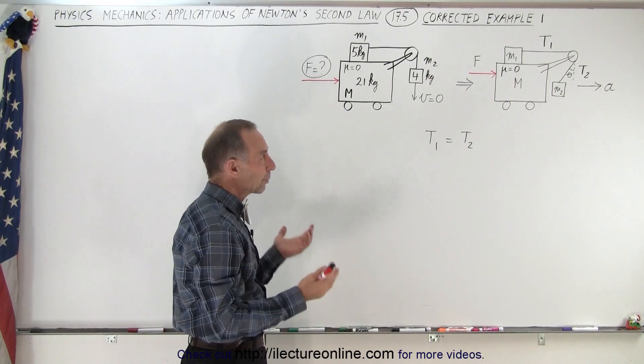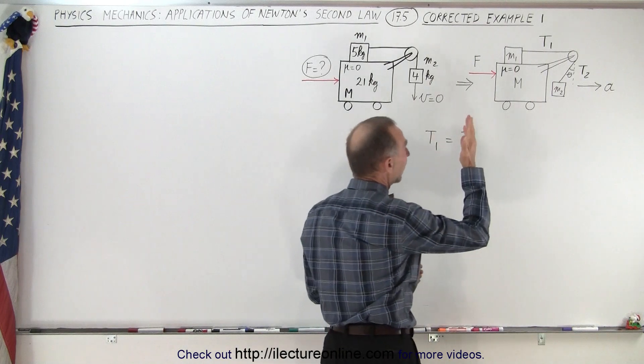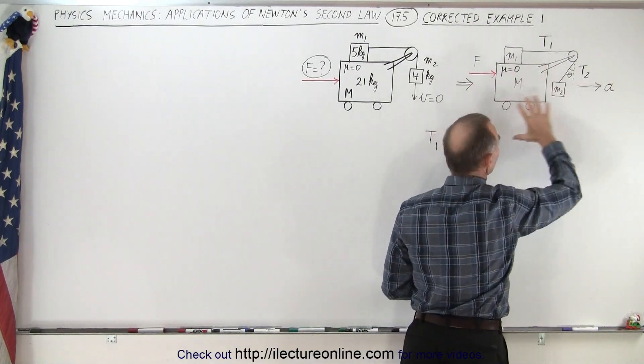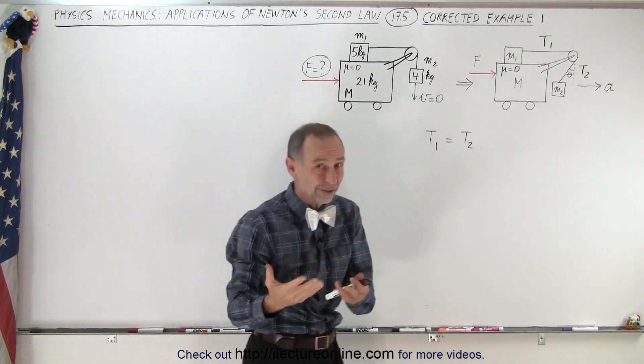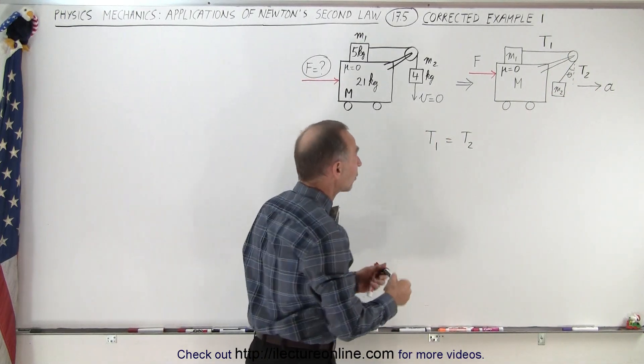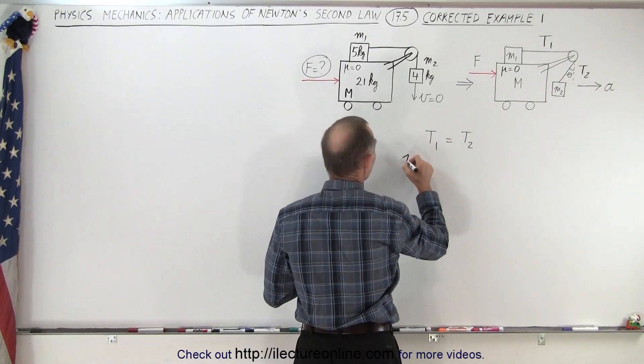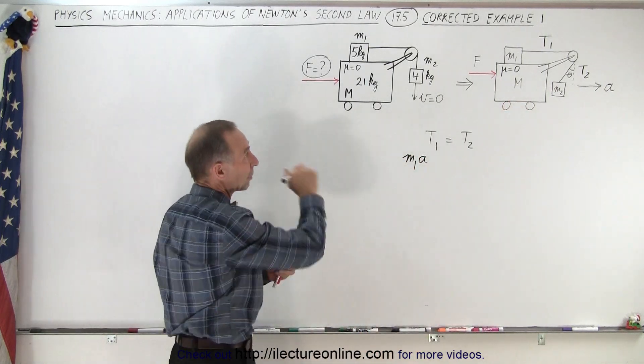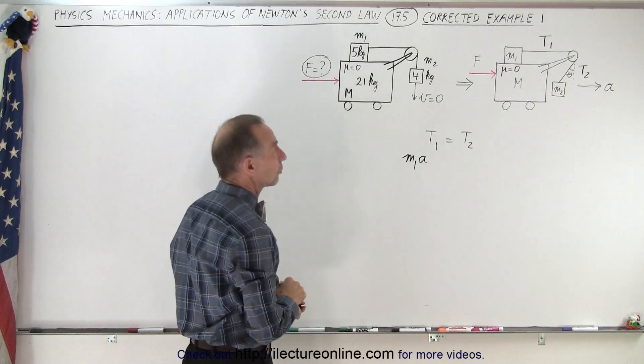To figure out what the tensions are, we can say tension 1 has to be m1 times whatever the acceleration is of the whole system. We know from Newton's second law that f equals ma, so tension 1 must equal mass 1 times whatever the acceleration is of that mass. That's the tension that's going to cause that mass to accelerate to the right.